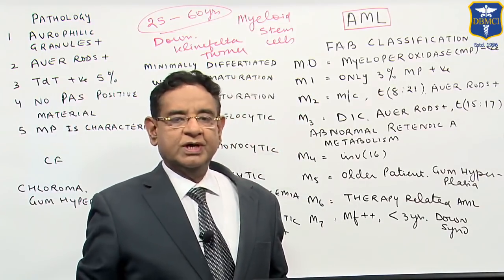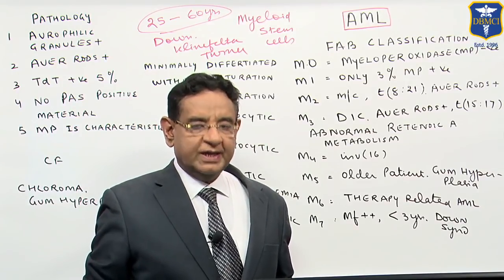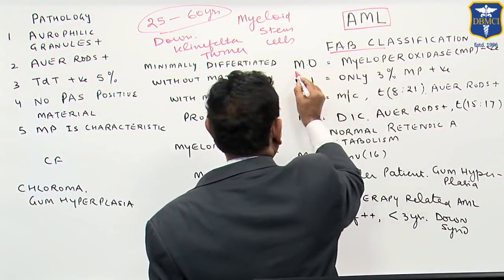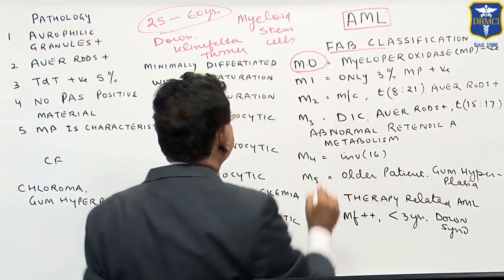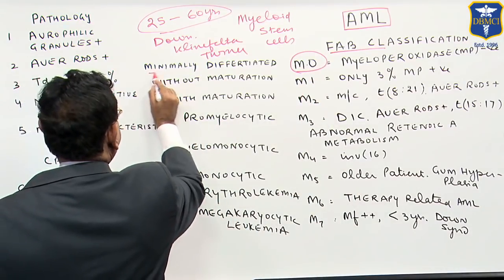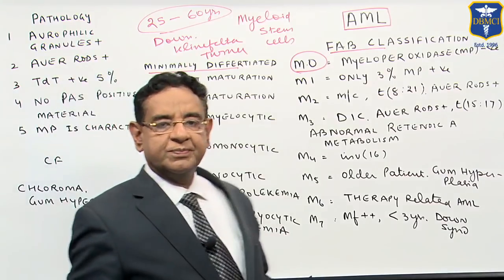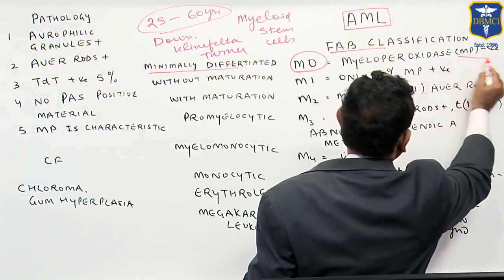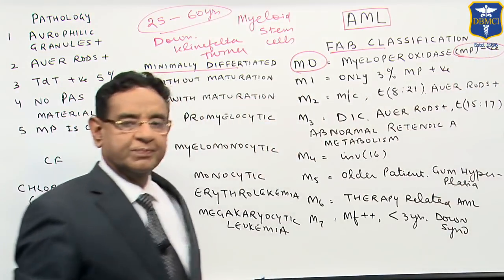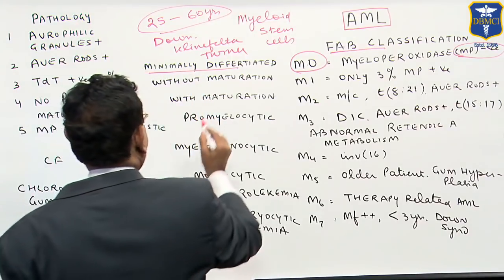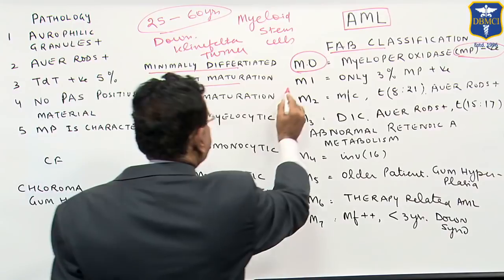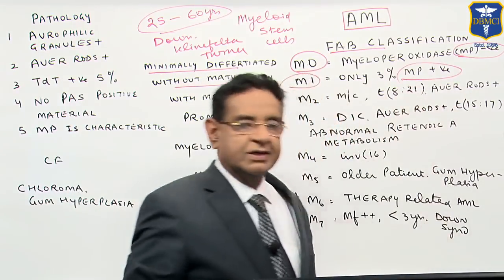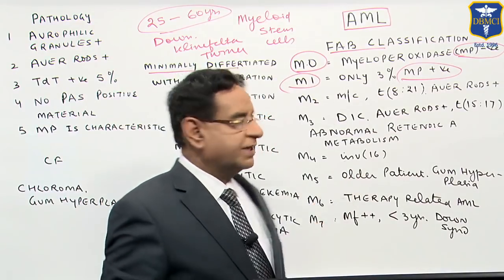Let us see how we classify AML. We have FAB classification. We have M0, which is also known as minimally differentiated. M0 cells are myeloperoxidase negative — this is a very important point. Then we have M1, AML without maturation, where only 3 percent are myeloperoxidase positive.